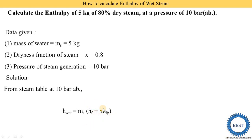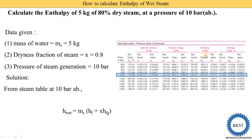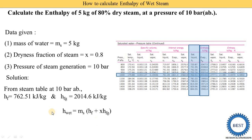To find hf and hfg from the steam tables, we require either temperature or pressure. Here, pressure is given, so we use the pressure-based steam table. The first column shows pressure in kilopascals — 10 bar equals 1000 kPa. Reading from the table, hf = 762.51 kJ/kg and hfg = 2014.6 kJ/kg.